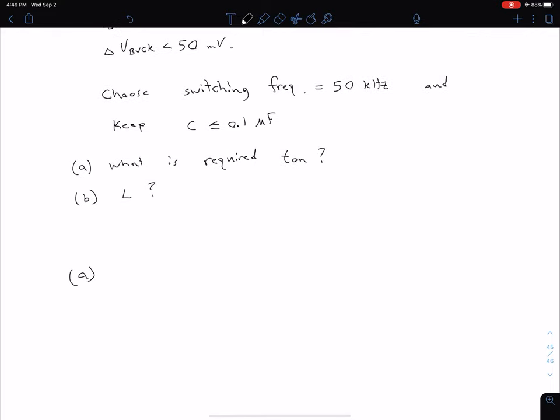So for part A, we know that our frequency is 50 kilohertz. Of course, in an example with more freedom, we might be able to choose that ourselves. But at any rate, we know our frequency, which means we also know our period. Our period is just 1 over the frequency. So 1 over 50 kilohertz is going to give us a 20 microsecond period. We can relate our switching period to our on time using our duty cycle. We know in general that our D_buck is equal to T_on divided by T.